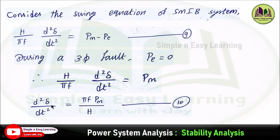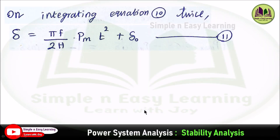To obtain the delta value, we integrate this equation twice. The first integration: the left-hand side becomes d delta by dt, and the right-hand side is pi f P_m over h, multiplied by t. The second integration gives delta equal to pi f divided by 2h into P_m t squared plus delta_0, where the second integration of t is t squared by 2, plus the integration constant delta_0.